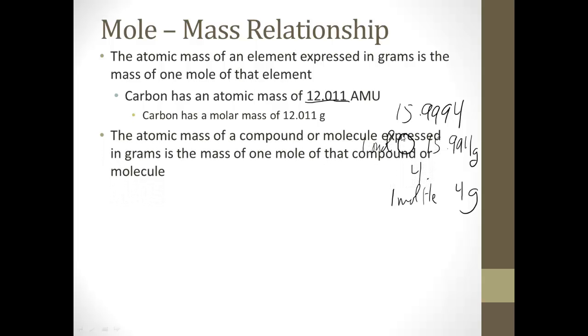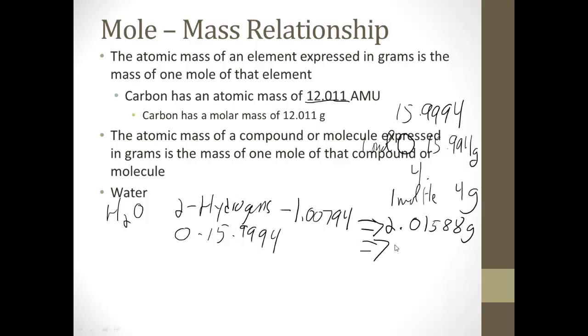The atomic mass of a compound or molecule expressed in grams is the mass of one mole of that compound or molecule, just like I told you. Let's do an example. Water is H2O. So it has two hydrogens, which have a mass of 1.00794 each for a total of 2.01588 grams. Our one oxygen has a mass of 15.9994, and there's one of them, so it's just 15.9994. We add them up, and we're going to get our total mass of a mole of water molecules is going to equal 18.01528 grams.